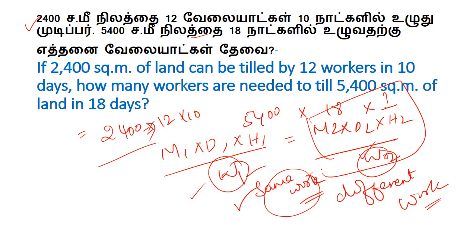Now, what is the concept of work? The same work means you use the same formula directly. But here the work is different — 2400 square meters and 5400 square meters are different. This is the main concept. So we use the formula.